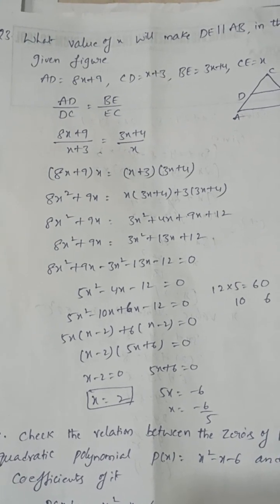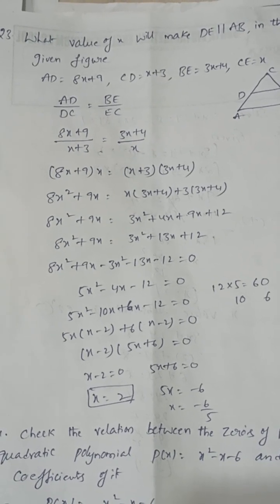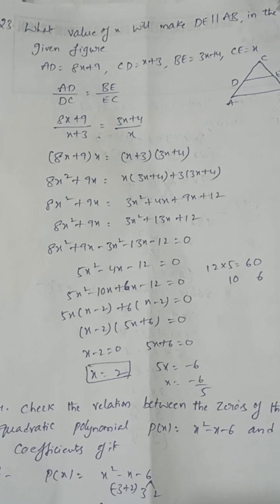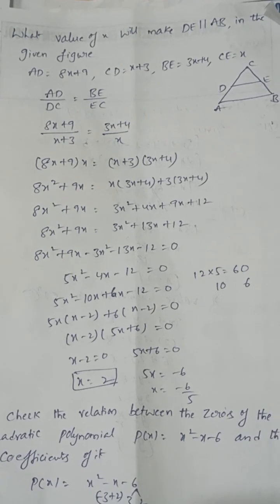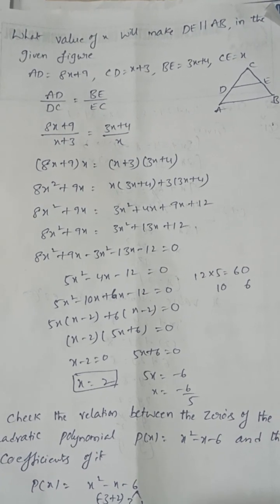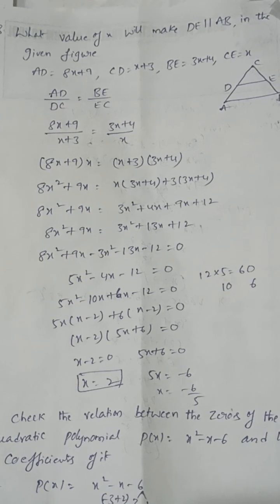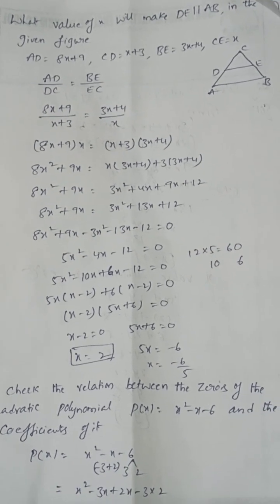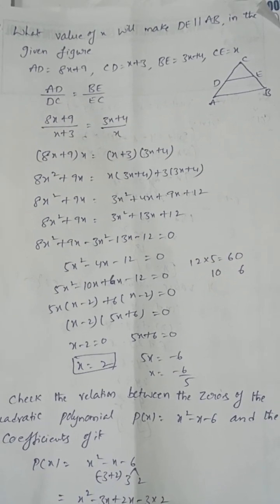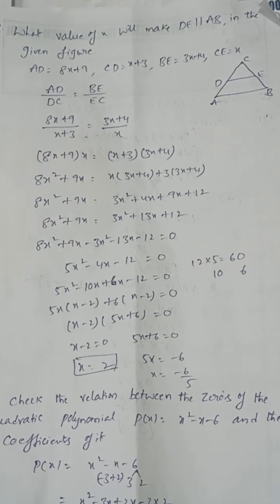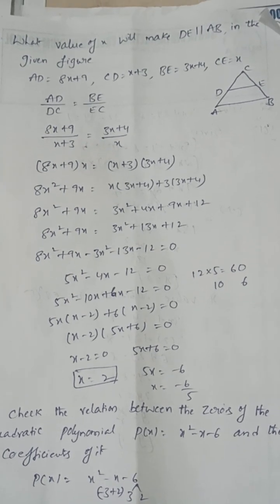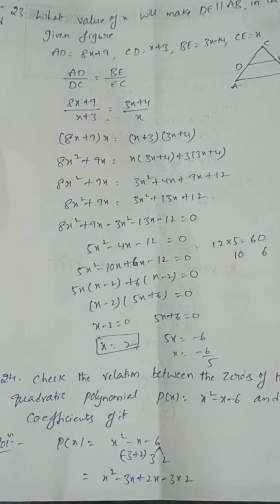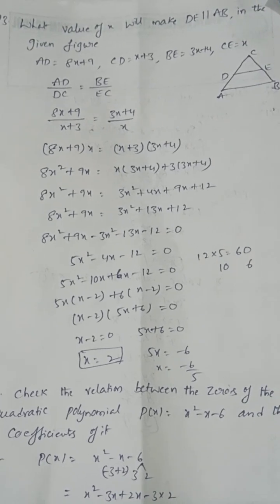What value of x will make DE parallel to AB? Given AD = 8x+9, CD = x+3, BE = 3x+4, CE = x. By BPT theorem, if DE is parallel to AB then AD/DC = BE/EC. Solving this proportion, you get x = 2.